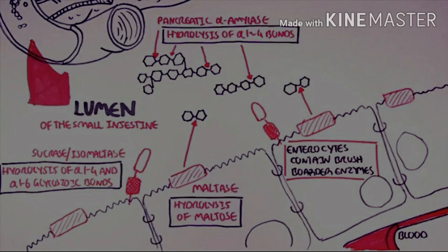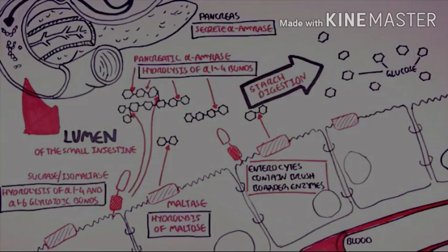Enterocytes also contain brush border enzymes which participate in the digestion of starch. These enzymes include maltase, which hydrolyzes maltose. Maltose is essentially two molecules of glucose. Another enzyme called sucrase-isomaltase is also present on the brush border, which hydrolyzes both 1,4 and 1,6 glycosidic bonds. So we end up with a lot of glucose molecules.